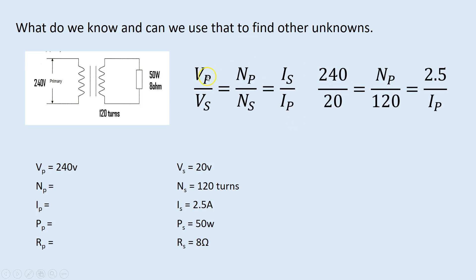The transformer formula is: Vp over Vs equals Np over Ns equals Is over Ip. We don't necessarily have to use it left to right - we can use any two pairs: Vp/Vs with Np/Ns, or Np/Ns with Is/Ip, or Vp/Vs with Is/Ip. The first thing to do is write the formula down, then write in the values you've got next to it. This lets you see what you have and what you need to find, which helps in selecting the right part of the formula.